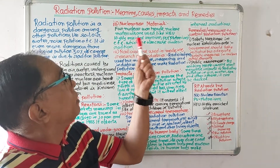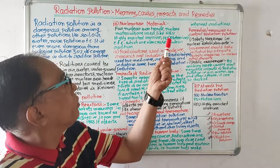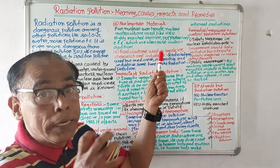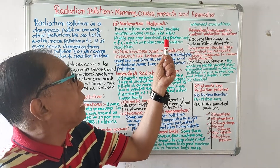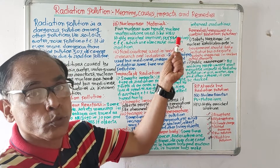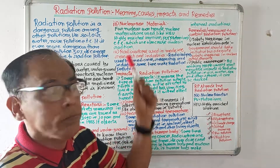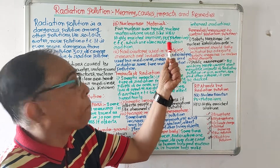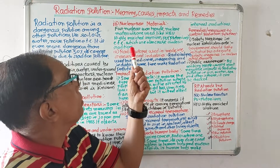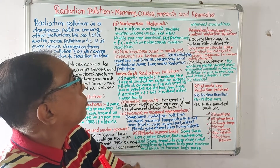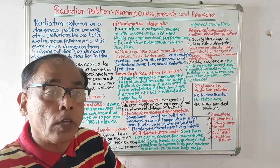Number three: nuclear materials used for nuclear warheads. For nuclear warheads, nuclear materials are used like HEU — which stands for Highly Enriched Uranium — and PU — which stands for Plutonium — which also cause radiation pollution.